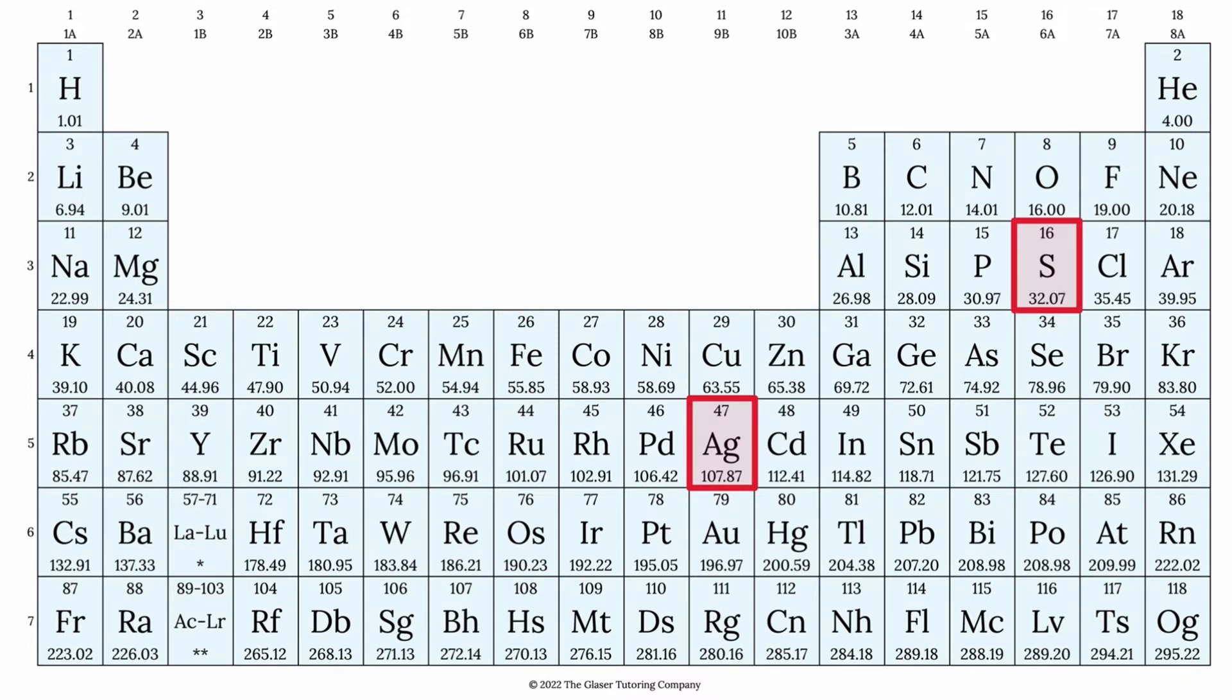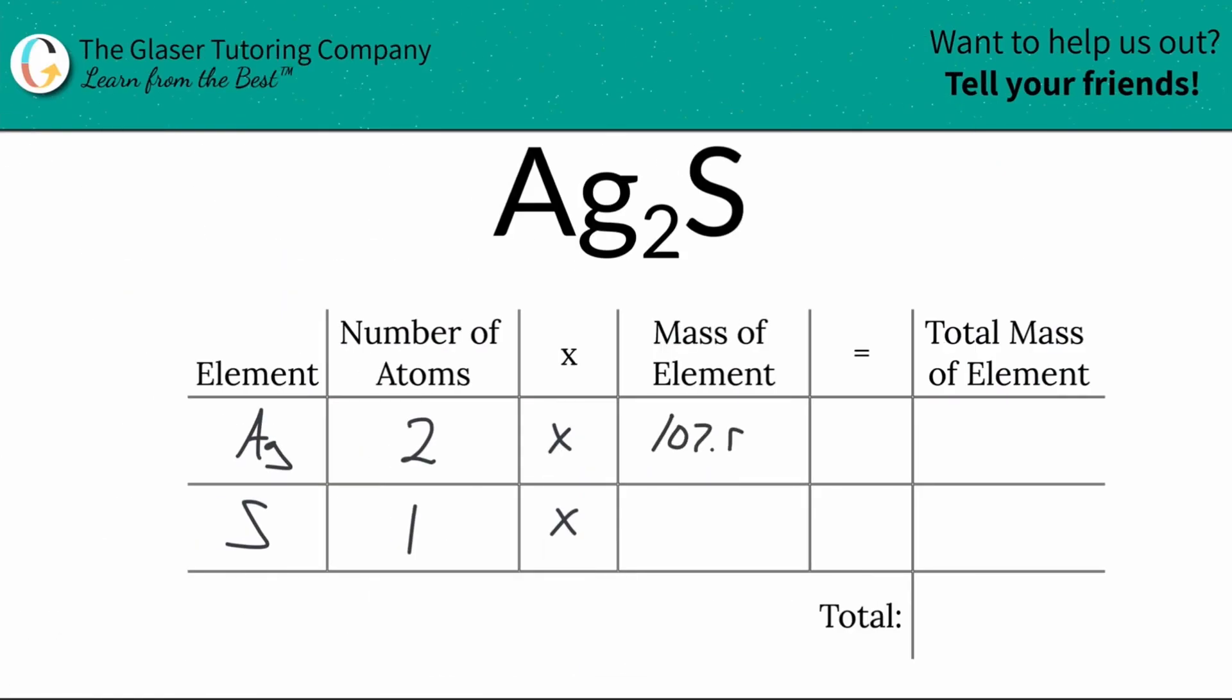And there's also the value of sulfur, 32.07. So let's write those down. We've got 107.87, and then we had 32.07.